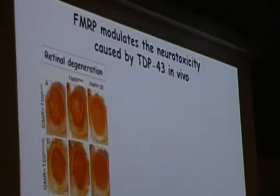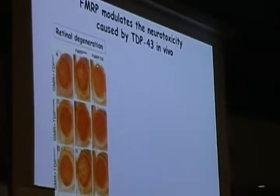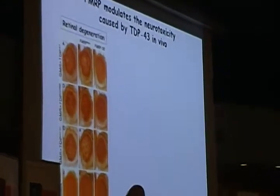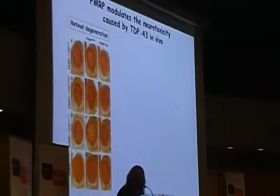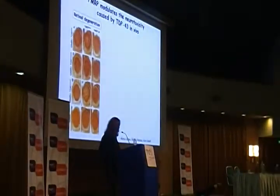When we modulate FMRP dosage — in this case, reducing FMRP by knockdown in the retina — we see increased depigmentation, consistent with an enhancement. While when we overexpress FMRP, we see a protective effect, with neurodegeneration almost completely going away.